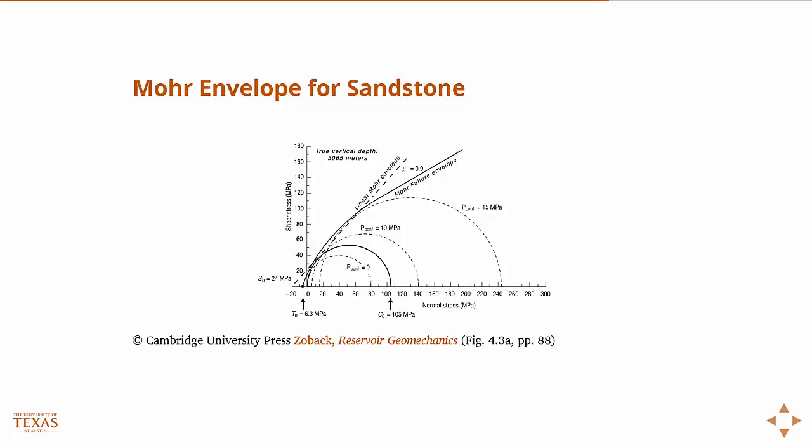Here is actual data on sandstone, the Mohr envelopes. These are the Mohr circles at multiple principal stress difference values. You can see that the real Mohr envelopes, the real line that touches the tangents to all those curves is here, and the linearized is here. In this case, especially at high principal stress values, it's probably not a good approximation. You might want to use a different model. But at low principal stress differences, probably not such a bad model.